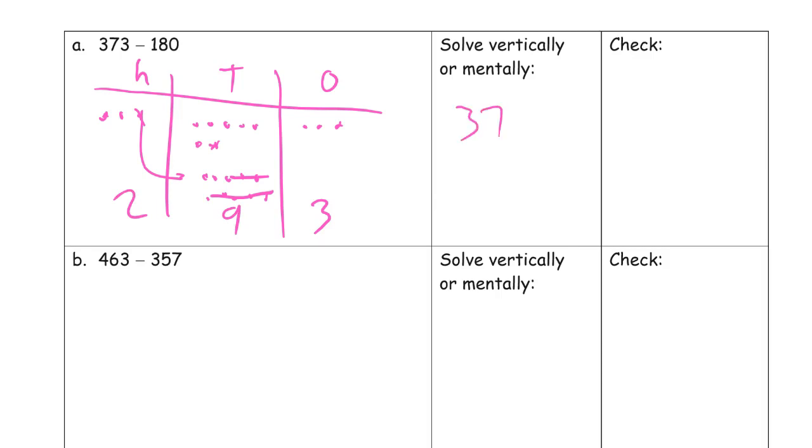Vertically. Starting with the ones place digits, three minus zero is three. Got to decompose 100. 17 tens minus eight tens is nine tens. And there's a hundred left. I forgot to cross out my hundred over here, so I got to fix that. It should just be 193.